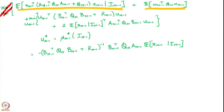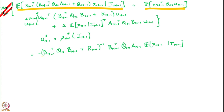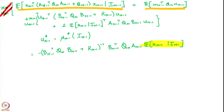Notice the form of this optimal control policy at time n-1. This particular policy multiplies the conditional expectation of the state by a constant matrix outside.